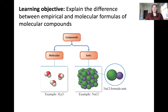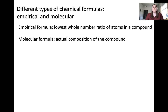Hopefully you remember that compounds can be classified as either molecular or ionic. Molecular compounds are composed of only non-metals, whereas ionic compounds are composed of metals and non-metals. There are different ways to express the formulas for molecular compounds. One way is through the empirical formula, which is the lowest whole number ratio of atoms in that compound.